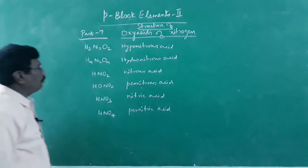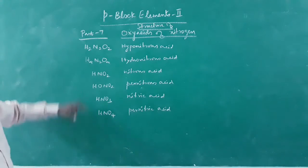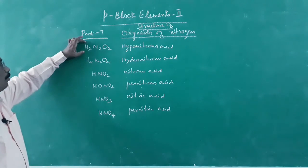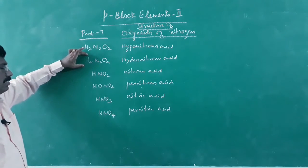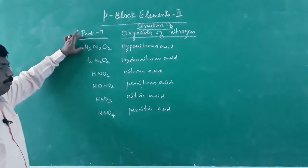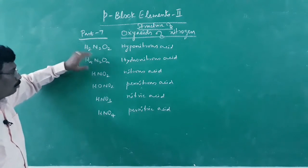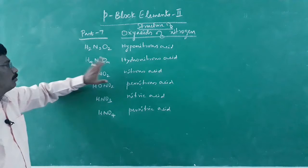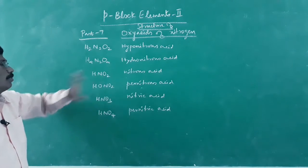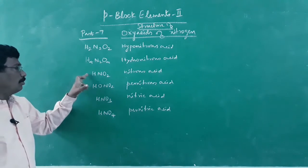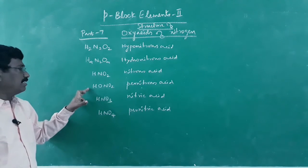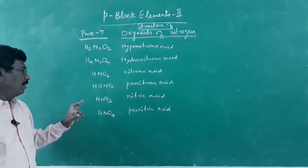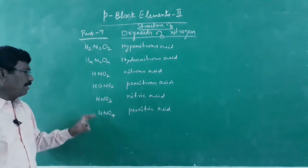When I say the structure, I can also give the oxidation state. So I have given six oxyacids: hyponitrous, hydronitrous, nitrous, pernitrous, nitric, and pernitric acid.